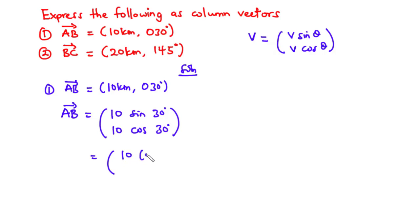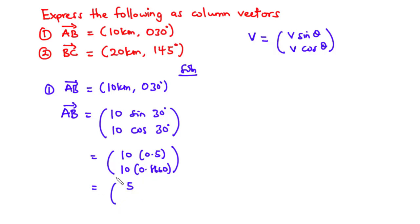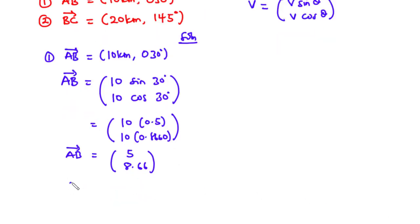Sin 30 gives 0.5 and cos 30 gives 0.8660. So 10 times 0.5 is 5 and 10 times 0.8660 is 8.66. This is the column vector form of vector AB, which can also be written as vector AB equals 5i plus 8.66j.